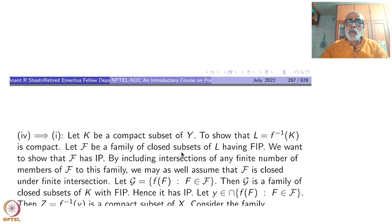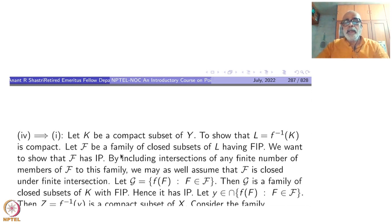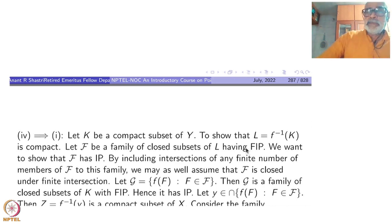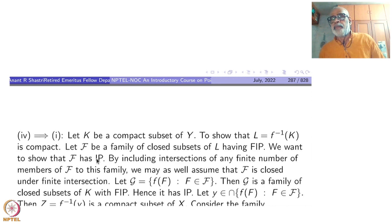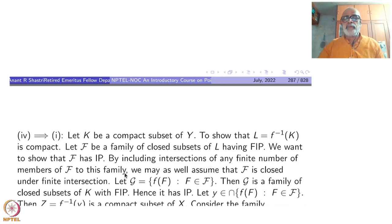Take F, the family of all closed subsets of L having the finite intersection property. If we show that the intersection of F is non-empty, it will follow that L is compact. We want to show that F has the finite intersection property: any finite collection of members of F has non-empty intersection. By including intersections of any finite number of members of F, we may assume F is closed under finite intersection.